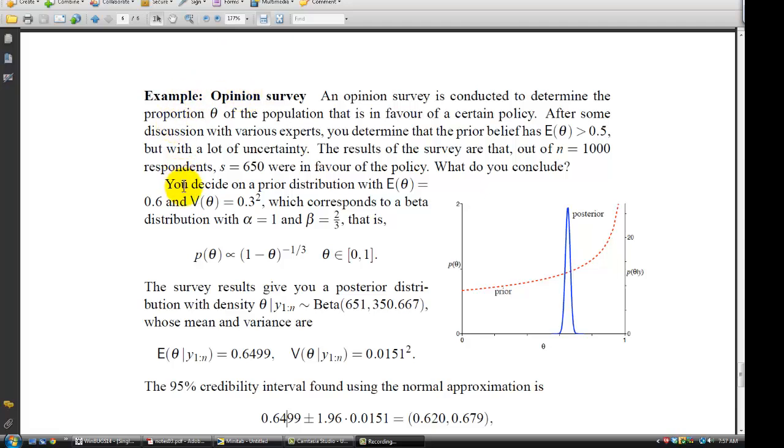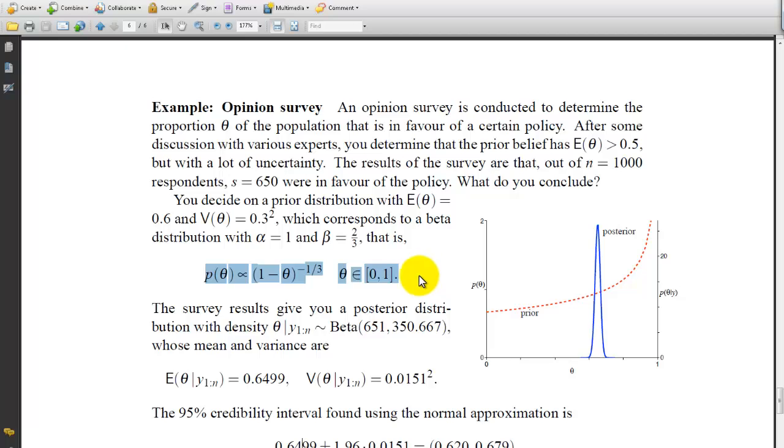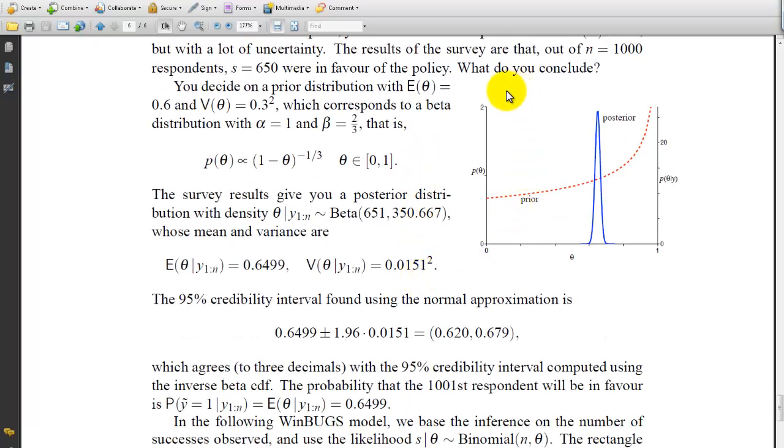So you decide a prior distribution of theta would be 0.6 with V theta 0.3 squared, which corresponds to a beta distribution of alpha equals 1 and beta equals 2 thirds. And this is how you put it in symbology. So our graph over here, probability of theta, Y and theta on the X. This is the prior distribution with the posterior plot here.